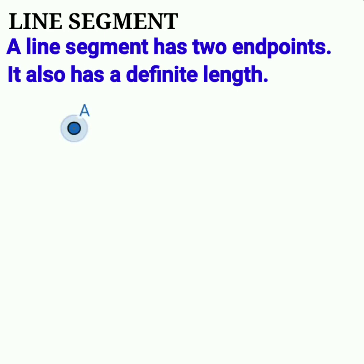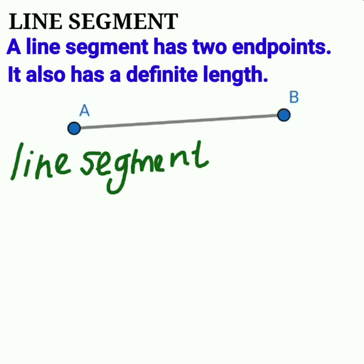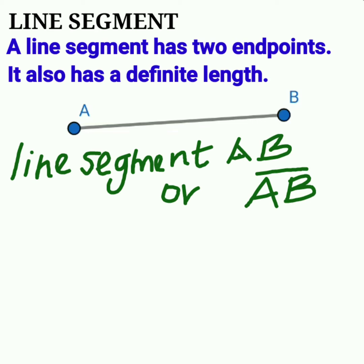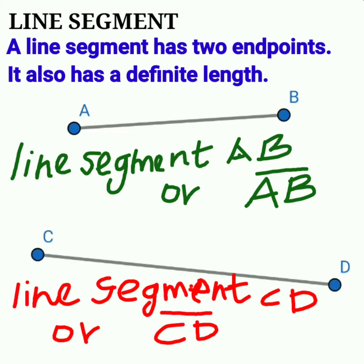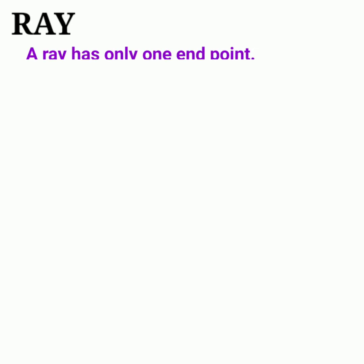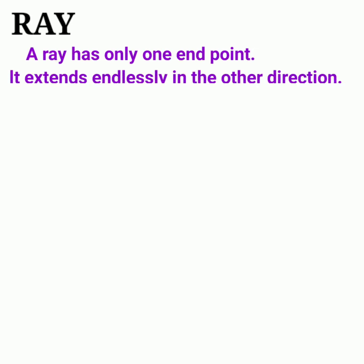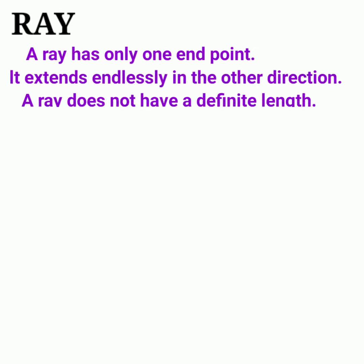A line segment has two endpoints and a definite length. Examples: line segment AB, line segment CD.